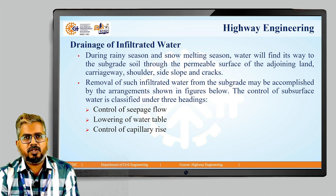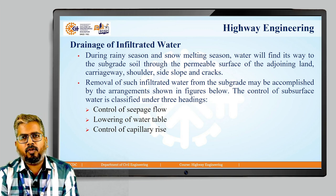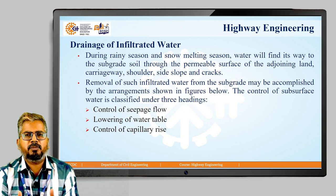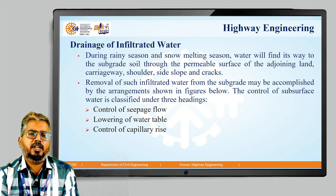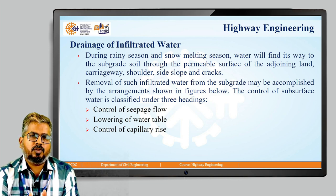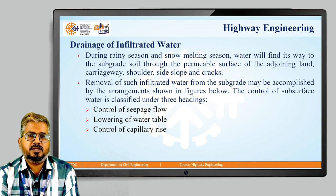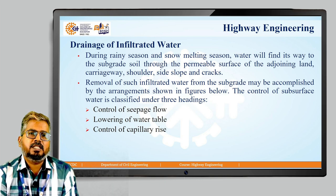First, we have the drainage of infiltrated water. During rainy season or whenever snow melts, water will find its way to the subgrade soil through the permeable surface of the adjoining land, carriageway, shoulder area, side slopes, and cracks. The removal of such infiltrated water from the subgrade is a very difficult task and can only be accomplished through control of seepage flow, lowering of water level, and control of capillary rise — the three means of controlling subsurface water.